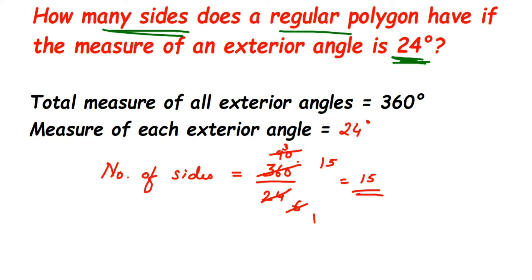I hope it is clear what we have done. We don't know how many sides are there, but we know that each exterior angle is 24 degrees, which means all exterior angles will be 24 degrees. But how many exterior angles are there? We don't know.